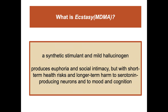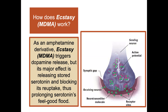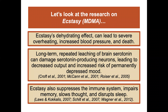Ecstasy is a synthetic stimulant and mild hallucinogen, also known as MDMA. It produces euphoria and social intimacy, but with short-term health risks and long-term harm to serotonin-producing neurons and to mood and cognition. As an amphetamine derivative, it triggers dopamine release, but its major effect is releasing stored serotonin and blocking its reuptake, prolonging serotonin's feel-good effect. Ecstasy's dehydrating effect can cause severe overheating, increased blood pressure, and death. Long-term, it can damage serotonin-producing neurons and suppress the immune system, impair memory, slow thought, and disrupt sleep.